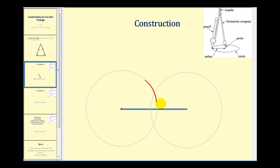Now, without adjusting the compass — and that's important, we don't want to change the radius of our compass — we're going to take the point and put it on the other end point, and then swing another arc above the segment. The second arc might look something like this.